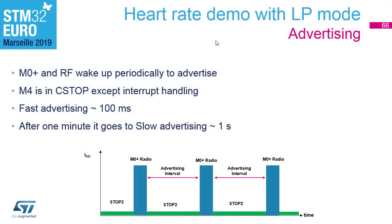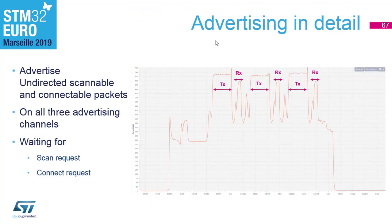Let's look at what we should see when we measure. The device starts advertising with a 1-millisecond interval, so we should see peaks every 100 milliseconds from the M0+ and radio. In between, the microcontroller is in Stop 0 and the consumption is very low — about 3 microamps — whereas when the radio is active it's at least a few milliamps. After one minute, advertising switches to a slower mode, advertising just once per second, though it remains connectable.